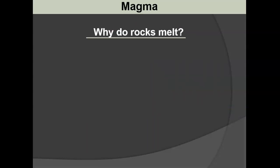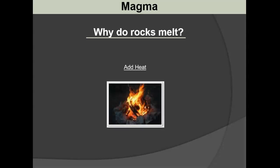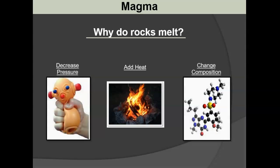Why do rocks melt in the first place? What's causing molten rock to occur at those locations? Most people say we add some heat, and that's a good reason - we can change the temperature. The other two reasons aren't as obvious. We can change the pressure: as we go down into the earth, heat is increasing and we'd expect some molten rock, but pressure is also increasing.